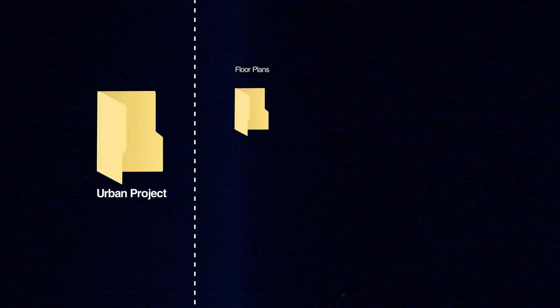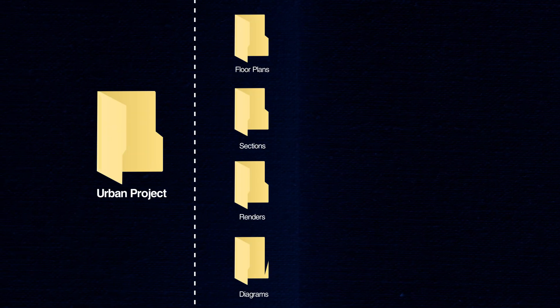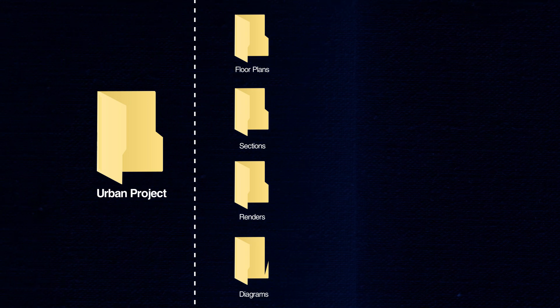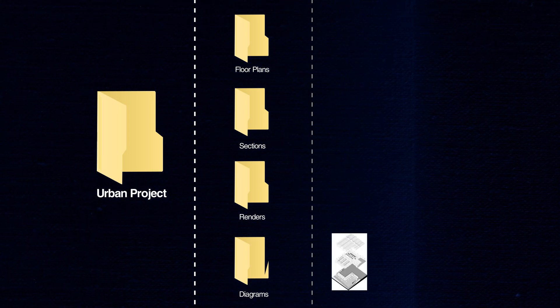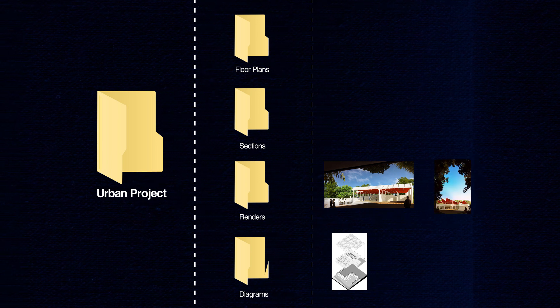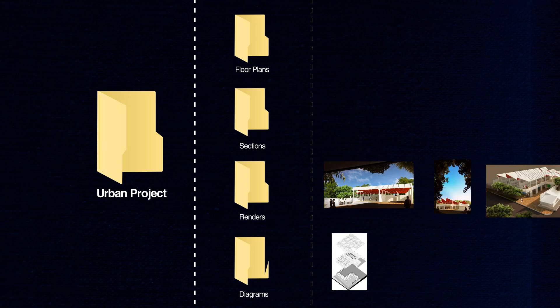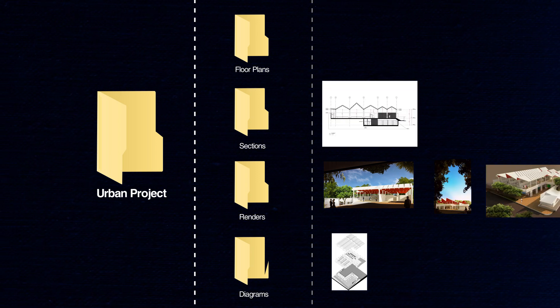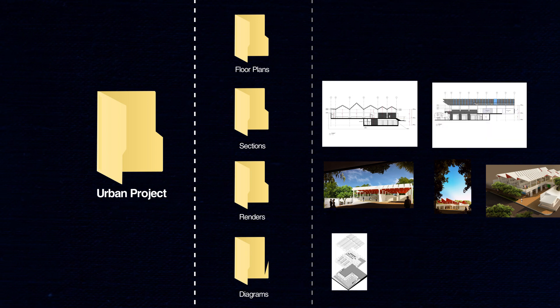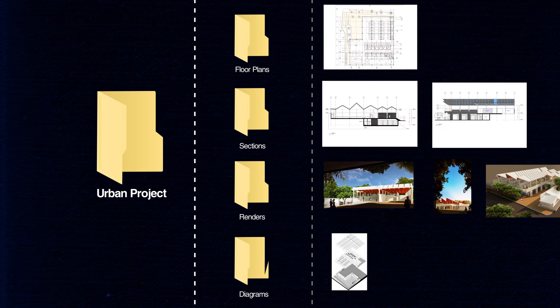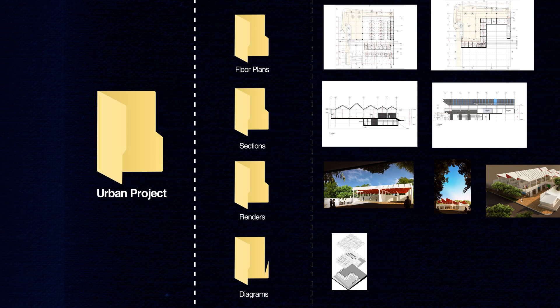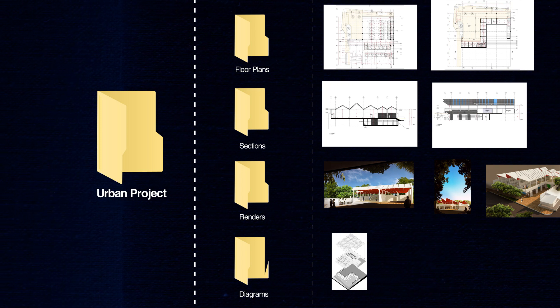Now that we have our composition and our list of images to produce, first create a folder with all the main files. I like to organize them by type of content: a folder of renders, a folder of floor plans, sections, a folder of axonometrics and diagrams, and a folder of text files. You can also organize by extension or any other category — your choice. Just make sure it is organized in some way or another.